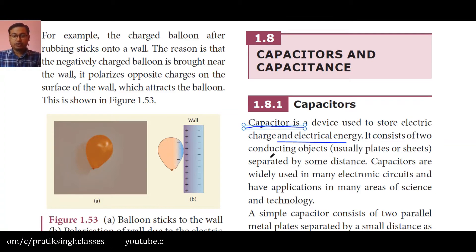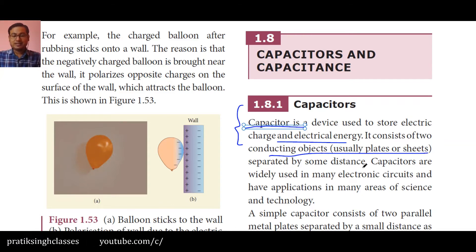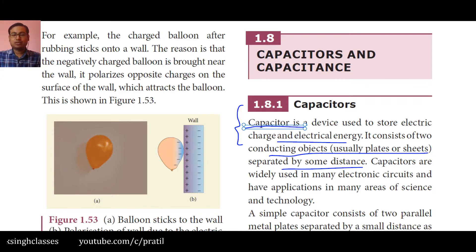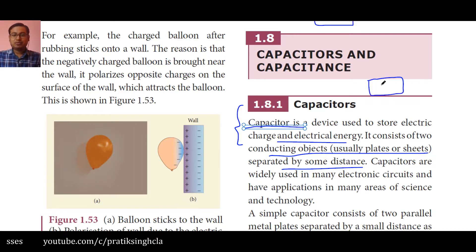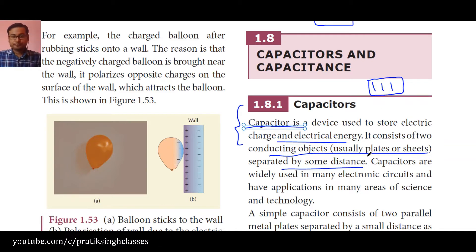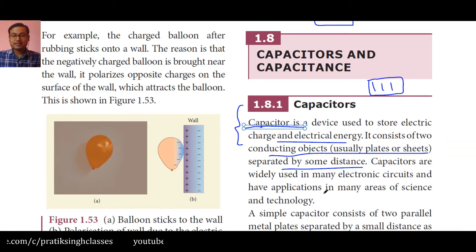A capacitor consists of two conducting objects — usually plates or sheets — separated by some distance. That means there will be two or more plates of any shape: circular, triangular, or any other shape, with a gap between them. Capacitors are widely used in many electronic circuits and have applications in many areas of science and technology.